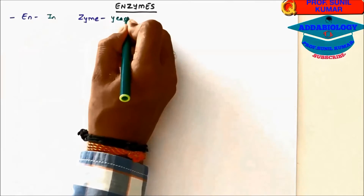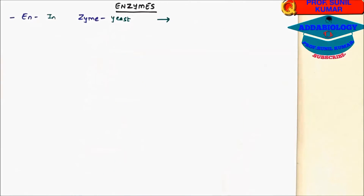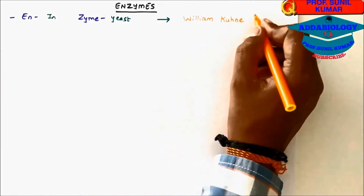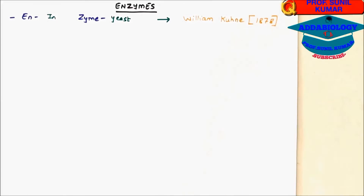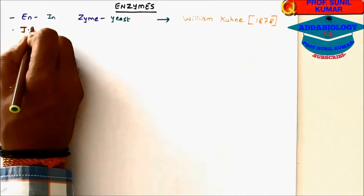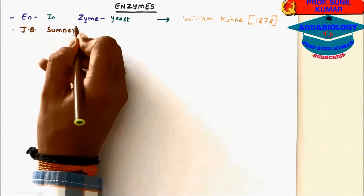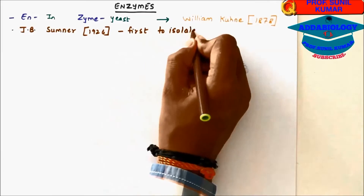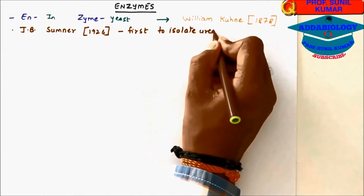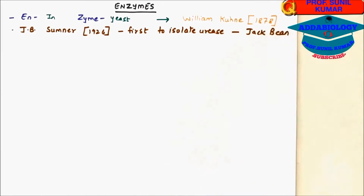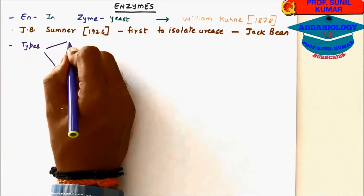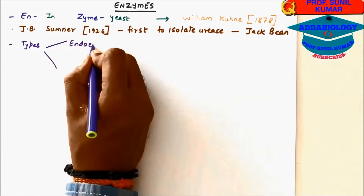When you talk about enzyme, the word enzyme means yeast — it was isolated from yeast. William Kühne in 1878 came up with the term enzyme. J.B. Sumner was the first scientist to isolate urease from the jack bean.